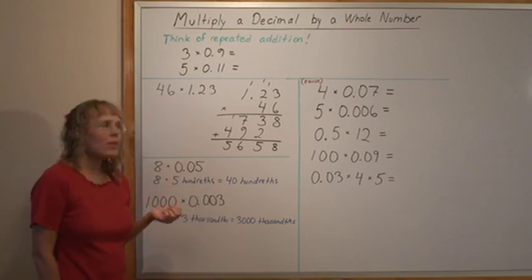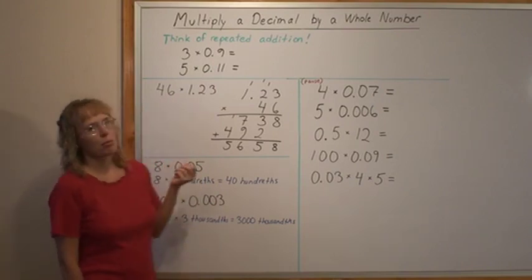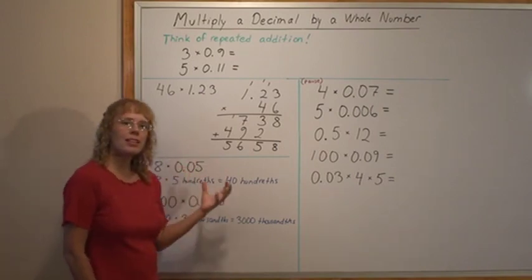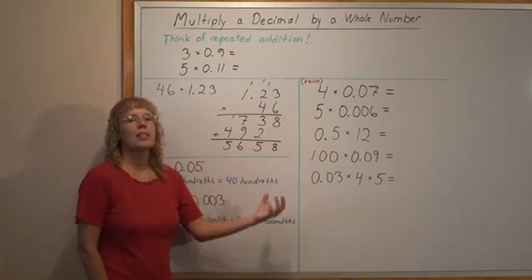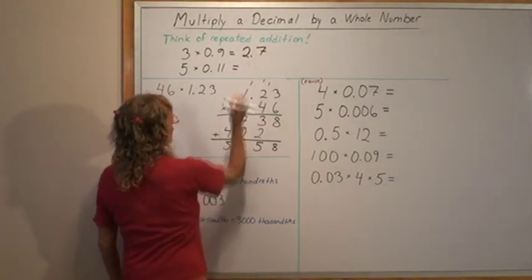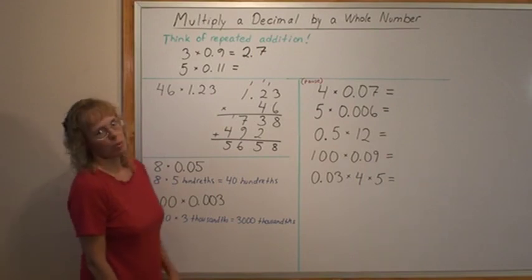You get 27 apples and this time our answer will be 27 tenths. It's like 9 tenths plus 9 tenths plus 9 tenths. 27 tenths and that is of course 2 whole and then 7 tenths. Not 0.27.